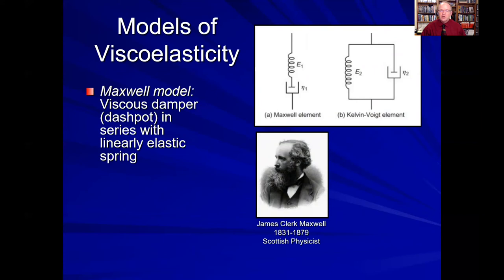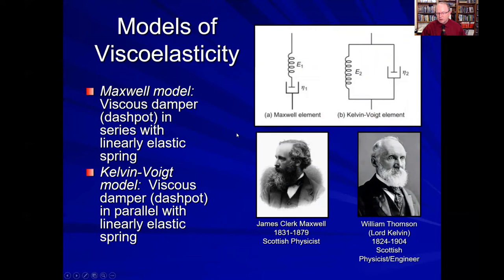There are many types of models for viscoelasticity. The earliest models come from James Clerk Maxwell, where we have the Maxwell element: a dashpot, which is a viscous element representing fluid flow in a piston and cylinder — this is time-dependent, meaning the faster we pull on that piston, the harder it is to pull it apart from its cylinder — placed in series with a linearly elastic spring. Lord Kelvin and German scientist Voigt developed the Kelvin-Voigt model, which puts the spring and dashpot in parallel. These models show how mathematically we can model viscoelasticity in body tissues and other materials.